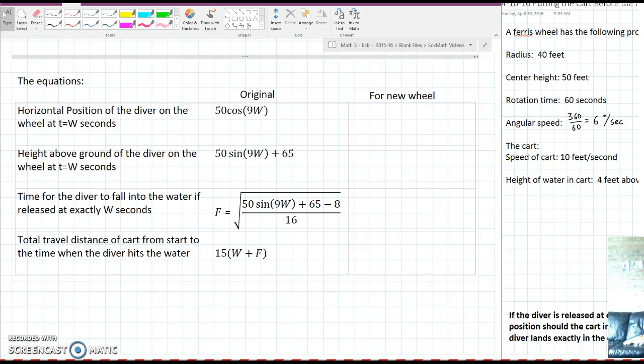We need to write some equations to govern the motion of the diver on this new Ferris wheel. So here we go. The first equation we'll write represents the horizontal position of the diver on the wheel at w seconds. The original equation was 50 times the cosine of 9w. 50 was the radius of the wheel so our new wheel has a radius of 40. We'll write 40 cosine and the 9 represented the speed of the wheel in the old problem so our new speed is 6 so we're going to say 40 cosine of 6w for the new wheel.